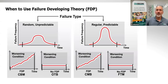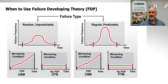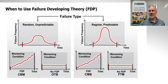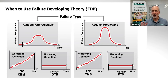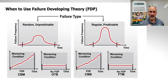If we combine the failure developing period with our different maintenance methods: for a random, unpredictable failure where we don't know the life but we do have a failure developing period, we'll probably do condition-based maintenance. But if the failure is random, we don't know when it's going to happen, and there's no failure developing period — we're lost. We'll have to operate to breakdown.